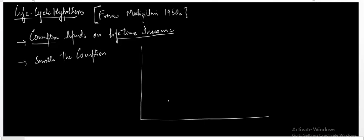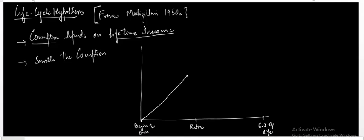Consider a timeline: this point is when a consumer starts to earn, this is the point where he decides to retire, and this is where his life comes to an end. As he begins to earn, his income is going to increase. His income stream increases up to the point of retirement, and after retirement his income stream falls — that is very obvious.